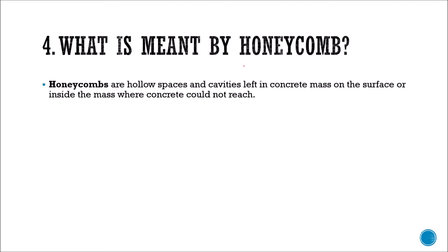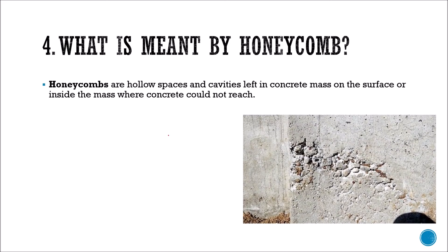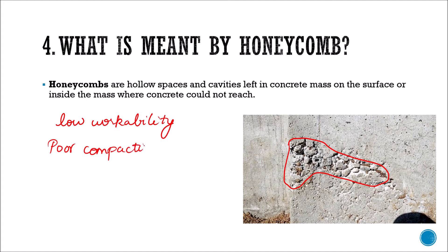The next question: what is meant by honeycomb? Honeycombs are hollow spaces and cavities left in concrete mass — on the surface or inside — where concrete could not reach. As shown in the diagram, this is what we call honeycomb. It happens because of low workability and poor compaction. After removing the shutter, honeycomb is visible to the naked eye. We can go for immediate replacement or repair the section. Honeycomb is a dangerous formation in concrete because it makes the inner part vulnerable to the environment, so it should be treated carefully at early stages.